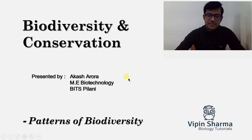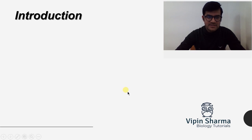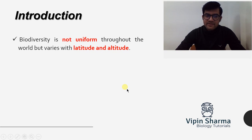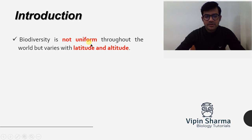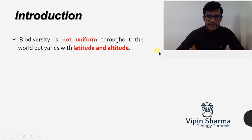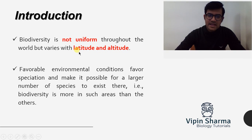Hey guys, this is Akash here for Webin Sharma Biology Tutorial. Today I'm going to talk about patterns of biodiversity. As we all know, biodiversity is the variety of life forms which we see on the planet. The fact is that this biodiversity is not uniform at all — it changes at different places on earth based on their latitude and altitude. The latitude and altitude of different places on earth are different, so the biodiversity levels at different places are different.